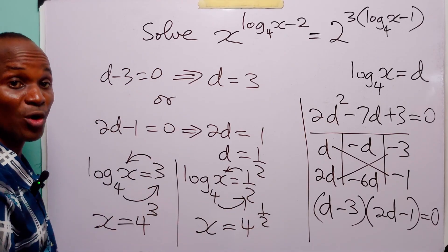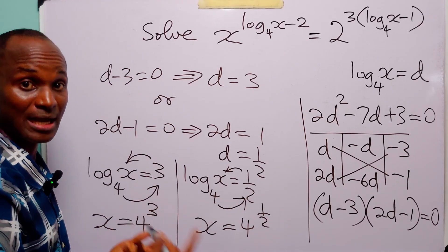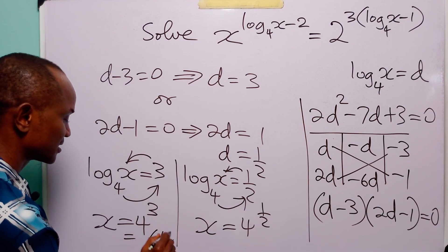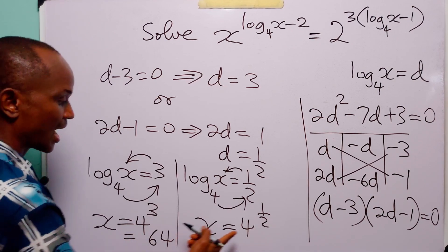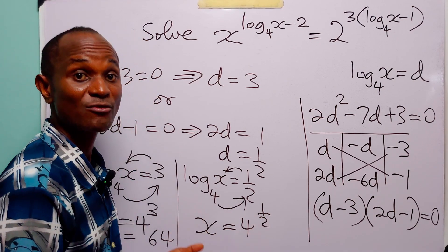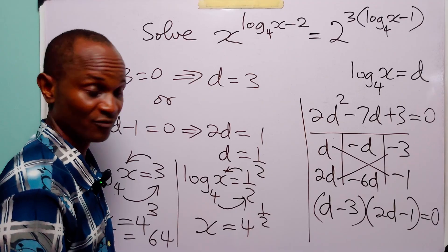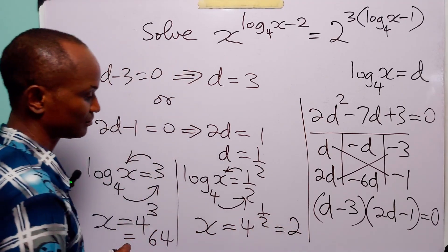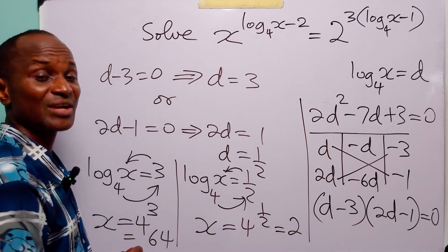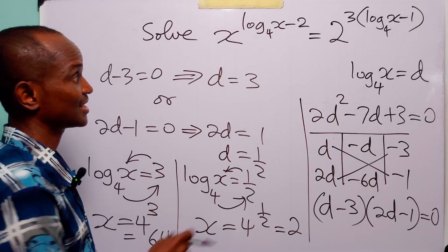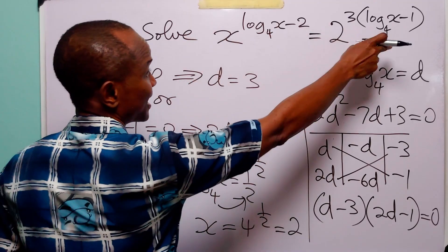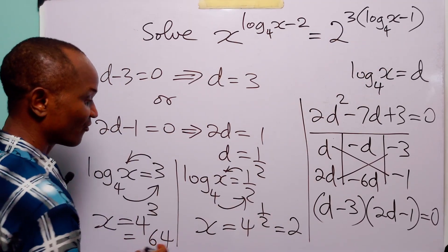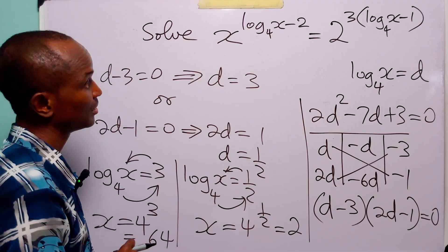Now, 4 to the power 3 is 4 times 4 times 4, which is equal to 64. And 4 to the power half is the square root of 4, which is equal to 2. So we have that the two values of x that satisfy this exponential equation are 64 and 2.